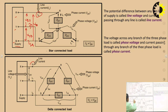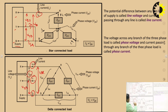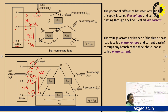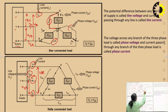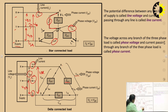In delta connection, IR, IY, IB are line currents, and VRY, VYB, VBR are line voltages. Phase voltage is the voltage across any branch of the three-phase load. In a star connected load, VRN, VYN, and VBN are phase voltages. In delta connection, VRY, VYB, and VBR are the phase voltages — these are across the loads ZPH1.